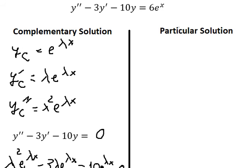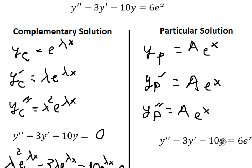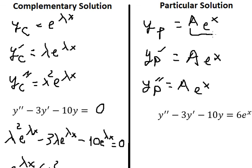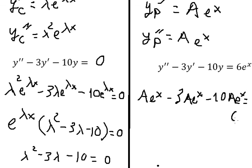Now for the particular solution, since we have e to the power of x on the right side, we set yp equal to A e to the power of x. The first derivative is A e to the power of x, and similarly the second derivative is also A e to the power of x. We substitute yp, its first derivative, and second derivative into the equation, giving us A e^x minus 3A e^x minus 10A e^x equals 6 e^x.